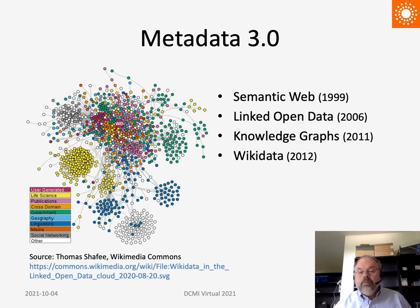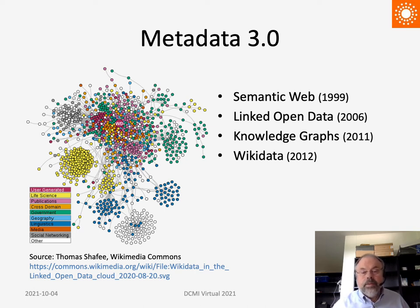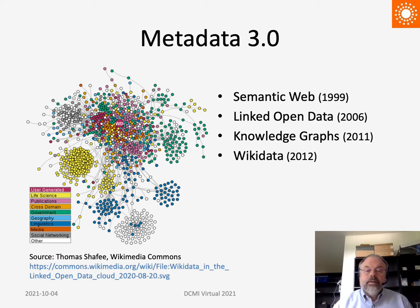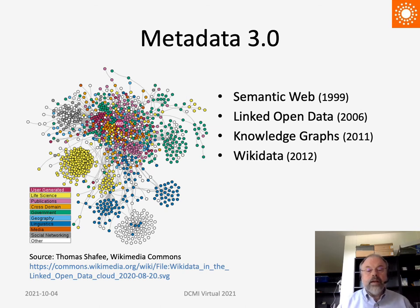When the World Wide Web arrived in the 1990s, with its interconnected web pages, there arose the idea of a web of data, or semantic web. Within a few years, this turned into a movement for linked open data. Corporations such as Google, Facebook, and Elsevier started to build their own webs, called knowledge graphs. Wikidata was created as a metadata graph for Wikipedia. Let's call this metadata 3.0.